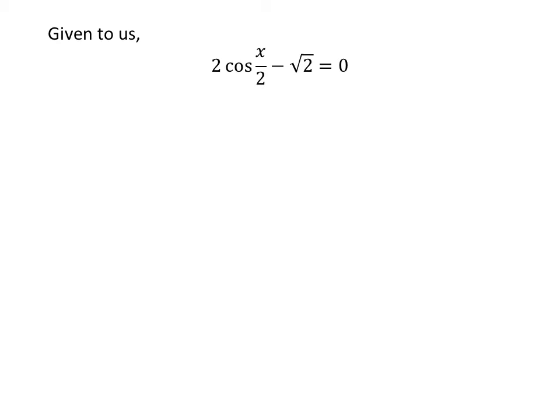We are given 2 times cosine of x upon 2 minus square root of 2 is equal to 0. Adding square root of 2 to both sides gives us 2 times cosine of x upon 2 is equal to square root of 2. Dividing the whole expression by 2 gives us cosine of x upon 2 is equal to square root of 2 upon 2.